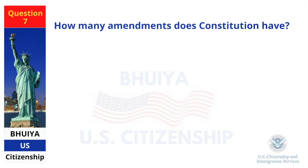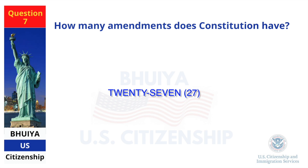How many amendments does the Constitution have? 27.